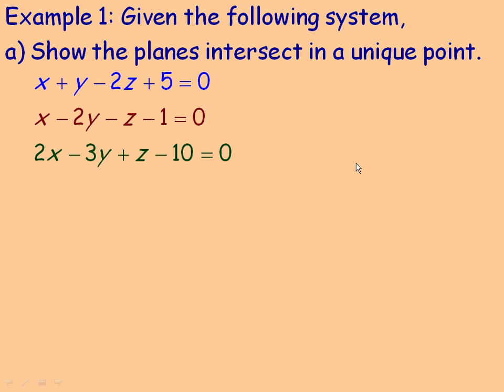In example number one, we're given the following system, and we're going to find the point of intersection on the next page. But first, on this page, I'm going to show you how to use the triple scalar product to show that there is indeed a unique point of intersection — one point of intersection.